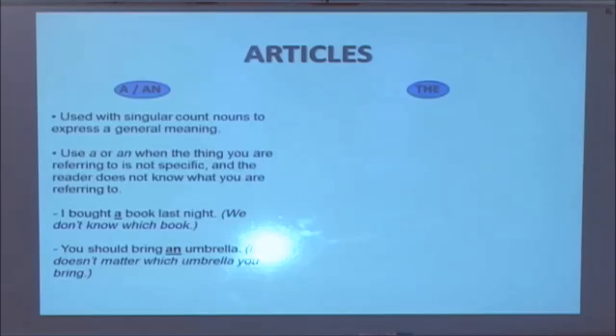A or an are used with singular count nouns to express a general meaning. You use a or an when the thing you are referring to is not specific and the reader does not know what he is referring to. Examples, I bought a book last night. We don't know which book. Second example, you should bring an umbrella. It doesn't matter which umbrella you bring.